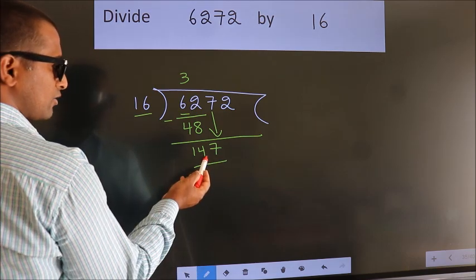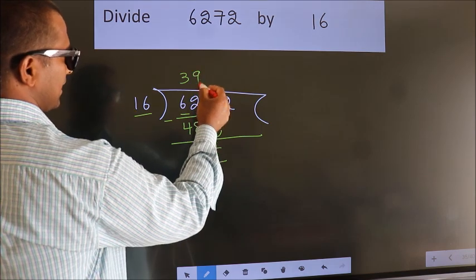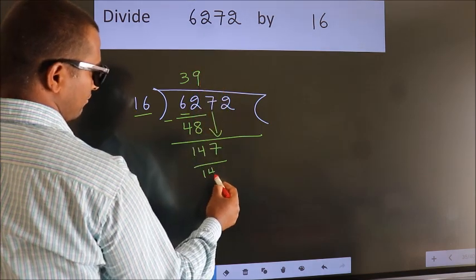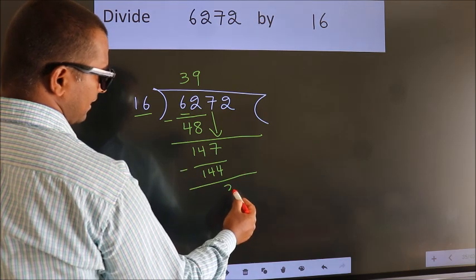A number close to 147 in 16 table is 16 nines, 144. Now, we subtract. We get 3.